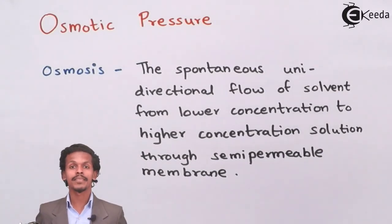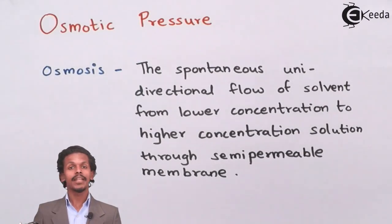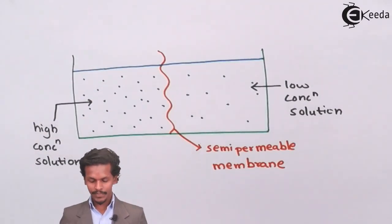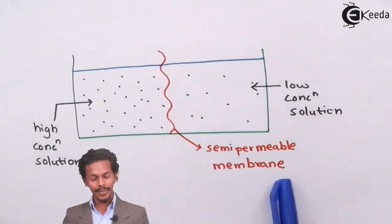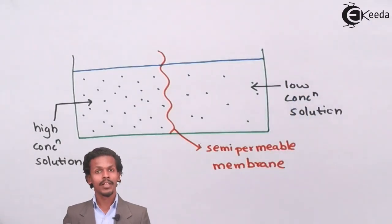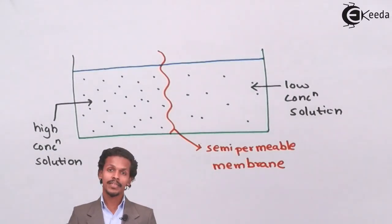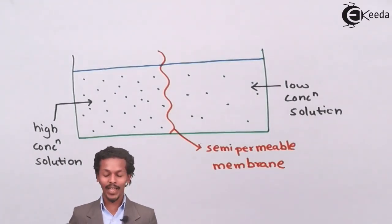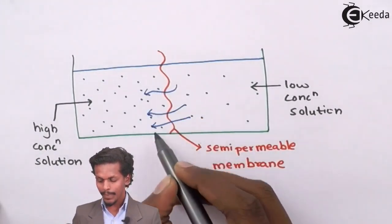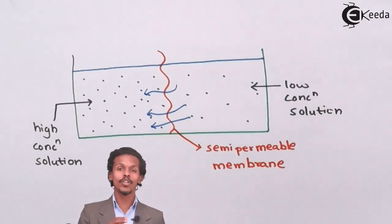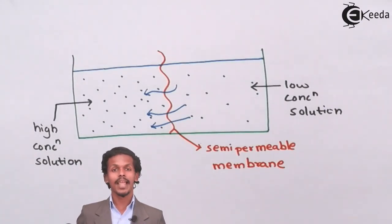This happens because of osmosis. Looking at a diagram, I have separated two solutions through a semi-permeable membrane. The left one is a high concentration solution and the right one is a low concentration solution. According to osmosis, the flow of solvent will be from low concentration to high concentration — all the solvent molecules move toward the highly concentrated solution. This natural process is known as osmosis.